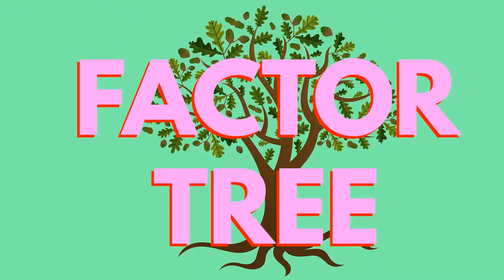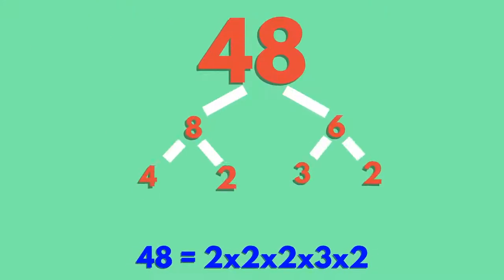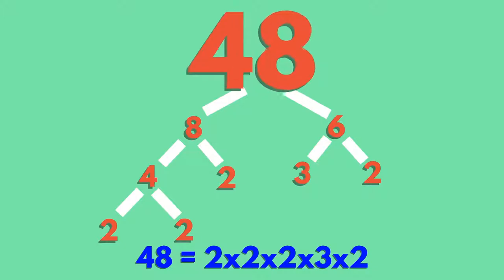A factor tree is a tool that breaks down any number into its prime factors. It's a diagram where you find the factors of a number, then the factors of those numbers, until you can't factor any more. Here's one for 48.